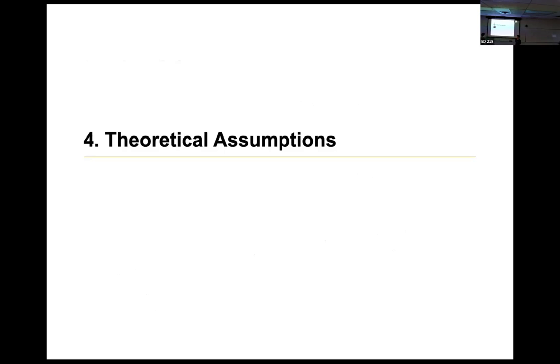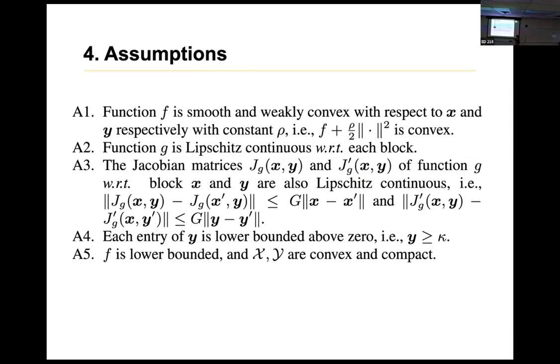To talk about the previous slide, we have to make some assumptions in order to fit this paper. This paper presents some five assumptions. Assumption one is function f is smooth and weakly convex with respect to x and y respectively with constant ρ. What is weakly convex? In some part, it's convex, but in the picture, in the big picture, it is convex. But in some small part, if you magnify it, it's not convex. It's either non-convex or it is concave. So, assuming that in the big picture, it's convex.